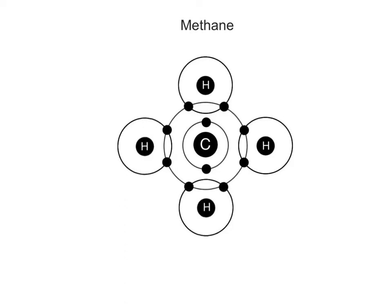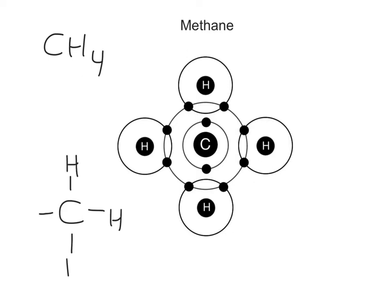Covalent bonds can form between atoms of the same or different elements. For example, a molecule of methane gas, with the molecular formula CH₄, contains a single covalent bond between the carbon atom and each of the four hydrogen atoms. Its structural formula is written as a carbon with four dashes between each of the four hydrogen atoms, with each dash representing one of the four single covalent bonds.